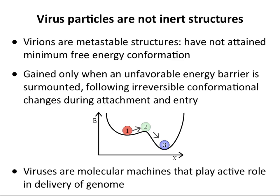Virions exist in a metastable confirmation — this is not the minimum free energy. That's when they're energetically favorable, but to get there they have to go over a barrier. This usually requires them to undergo conformational changes during entry. They have to overcome this barrier, and only then will they uncoat and deliver their genome. Just remember that they are machines and they play an active role in delivery — they're not passive at all.